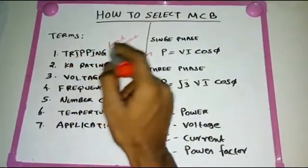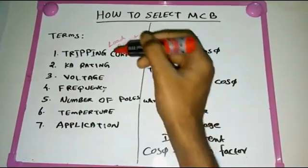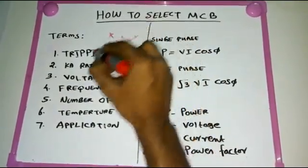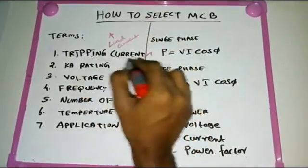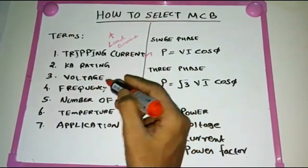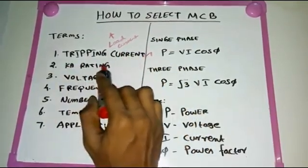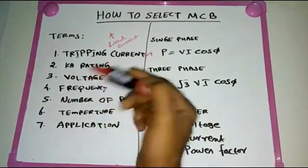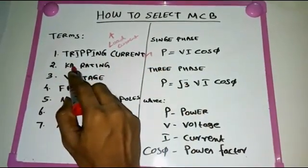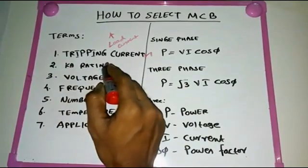We select the tripping current such that the load current represents 80% of it. That means if you have 80% load current, you select for 100% tripping current. For example, if load current is 80 ampere, you choose a 100 ampere tripping current MCB.